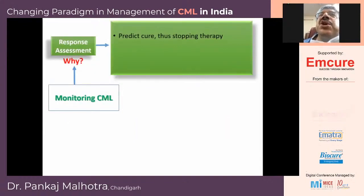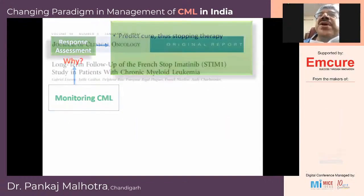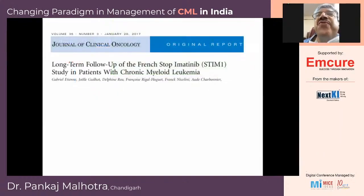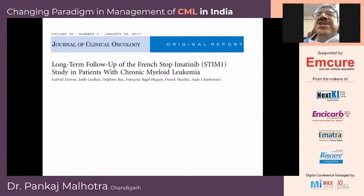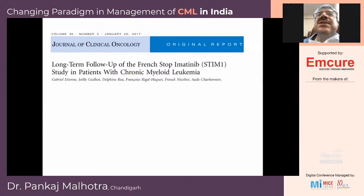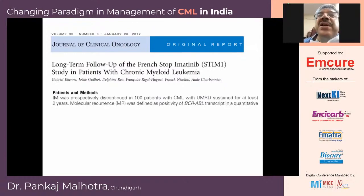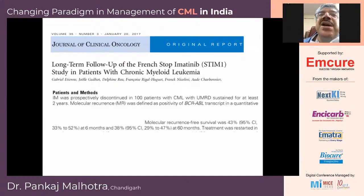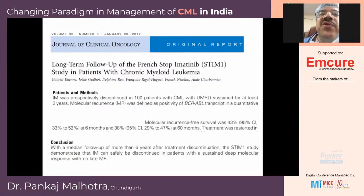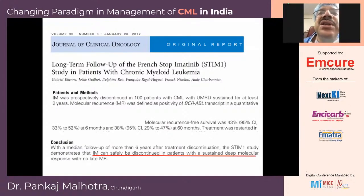The next goal is predicting cure and thus stopping therapy. We know about various stop Imatinib and stop second-generation TKI studies. One study — the long-term follow-up of the French Stop Imatinib trial — looked at 100 patients and found that almost 40% of patients were able to achieve a sustained molecular response.